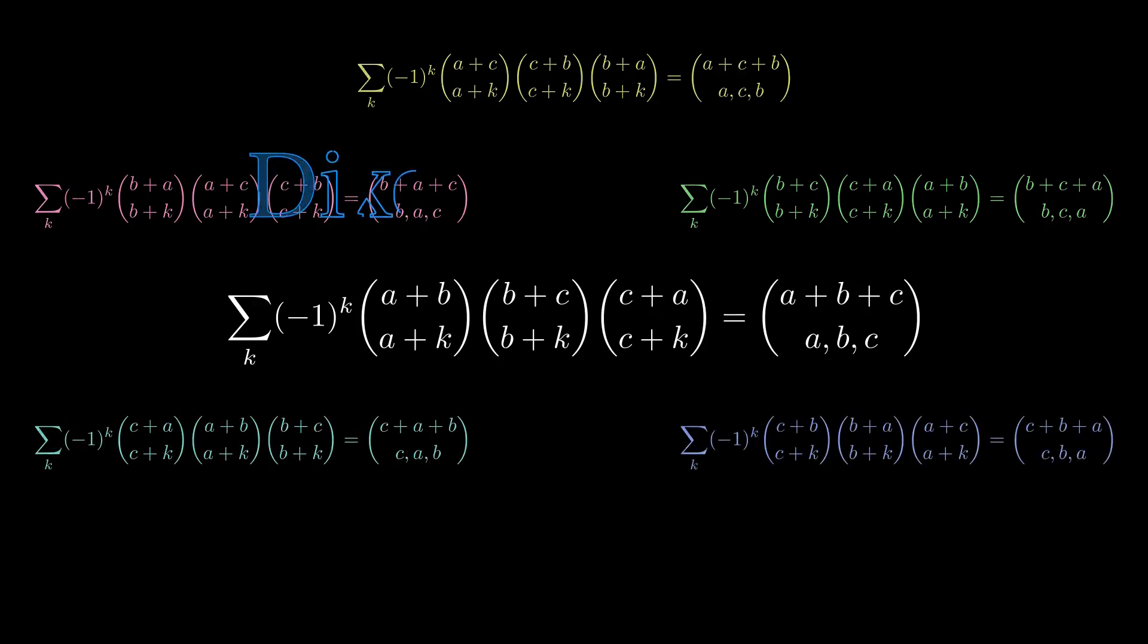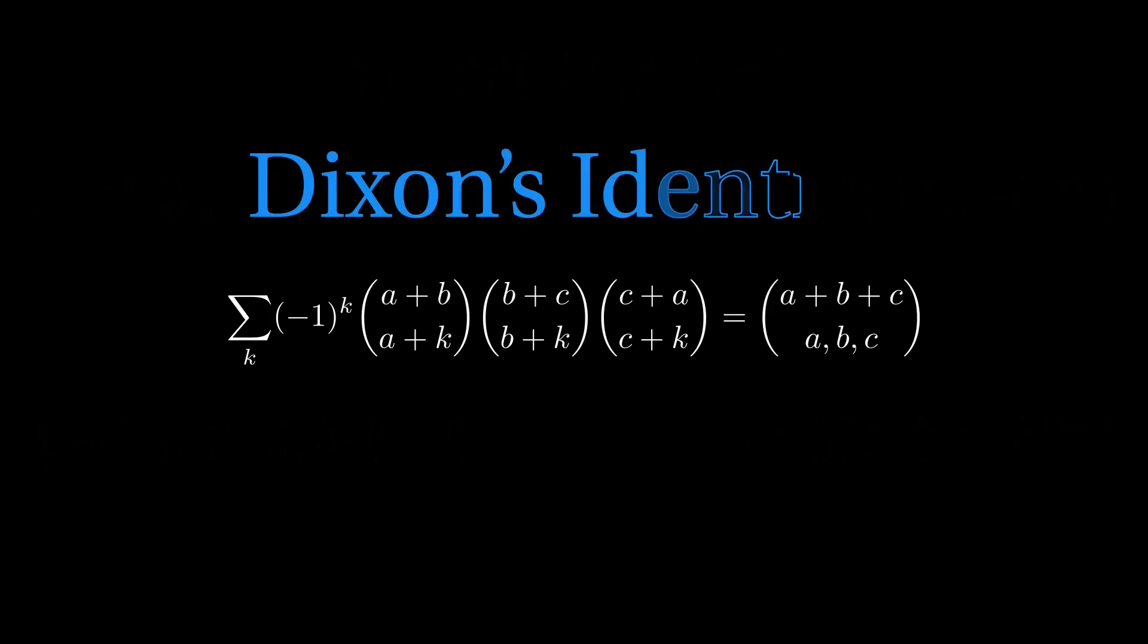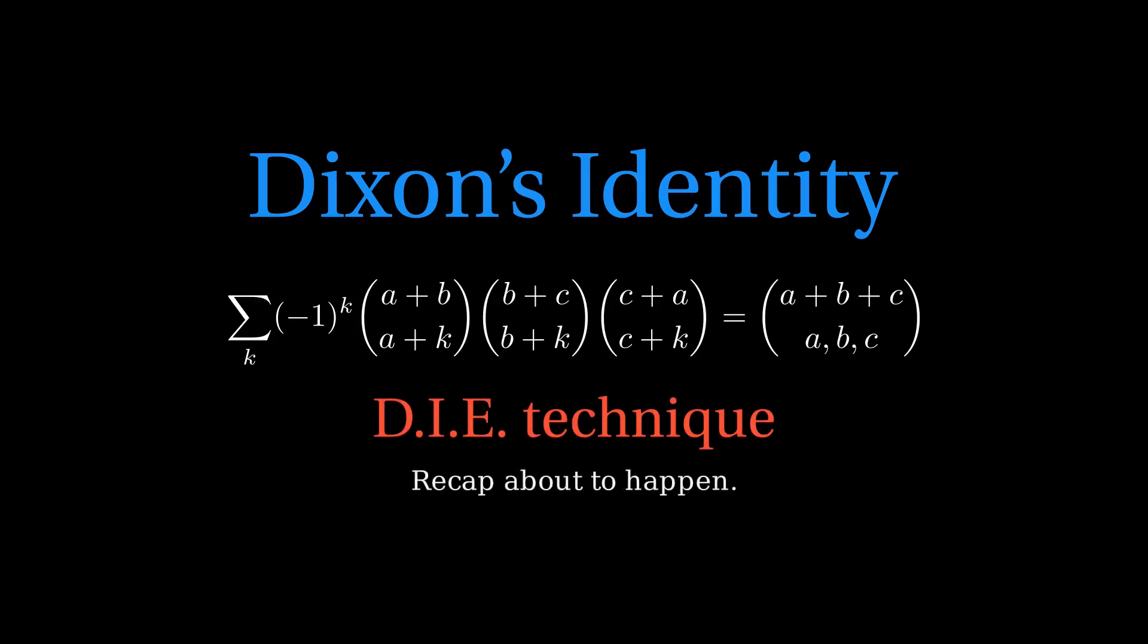It's called Dixon's identity, and I want to tell you the satisfying story why it's true using the fairly elementary DIE technique we developed in a previous video. If you haven't seen that, you've got options. I'm going to quickly recap it, or you can follow the link in the description and promise to come back here.